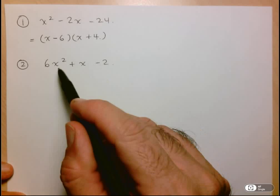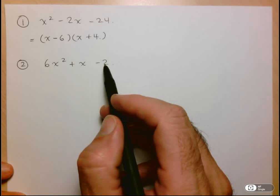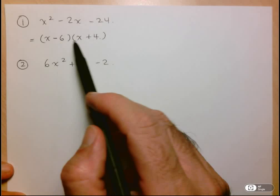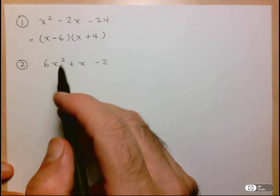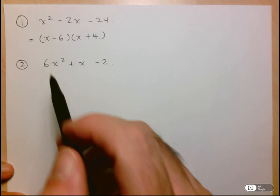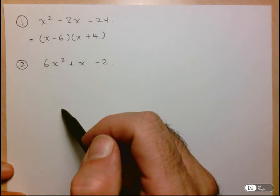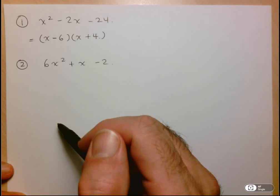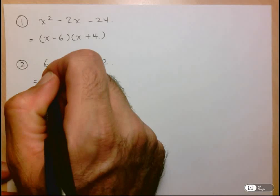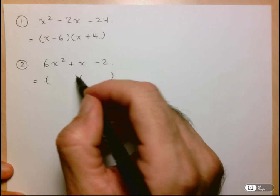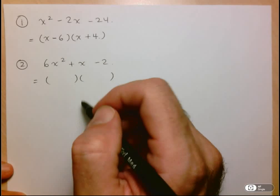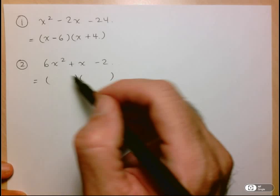There's only two numbers that multiply to 2. So in the second positions, you know you're going to have to have 1 and 2. This is slightly more complicated because 6 has more than just the two factors of 6 and 1. So you know that you're looking for two binomials. You know you're going to have 1 and 2 in these positions. The question is, is this going to be 2 and 3 or 6 and 1?